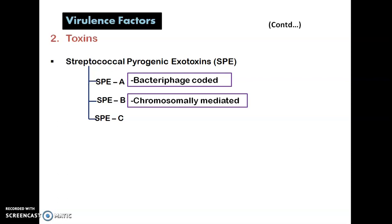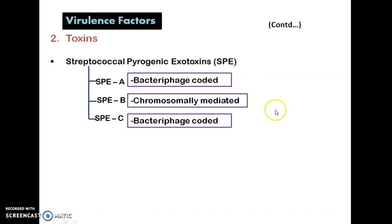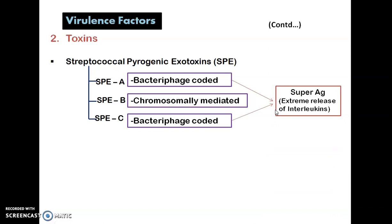SPE-B is chromosomally mediated. SPE-C is also bacteriophage coded. SPE-A and SPE-C together are known as superantigens, because they result in the extreme release of interleukins. The superantigen mediates an extreme release of interleukins, which is why it is known as a superantigen — it mediates a very high immune response.